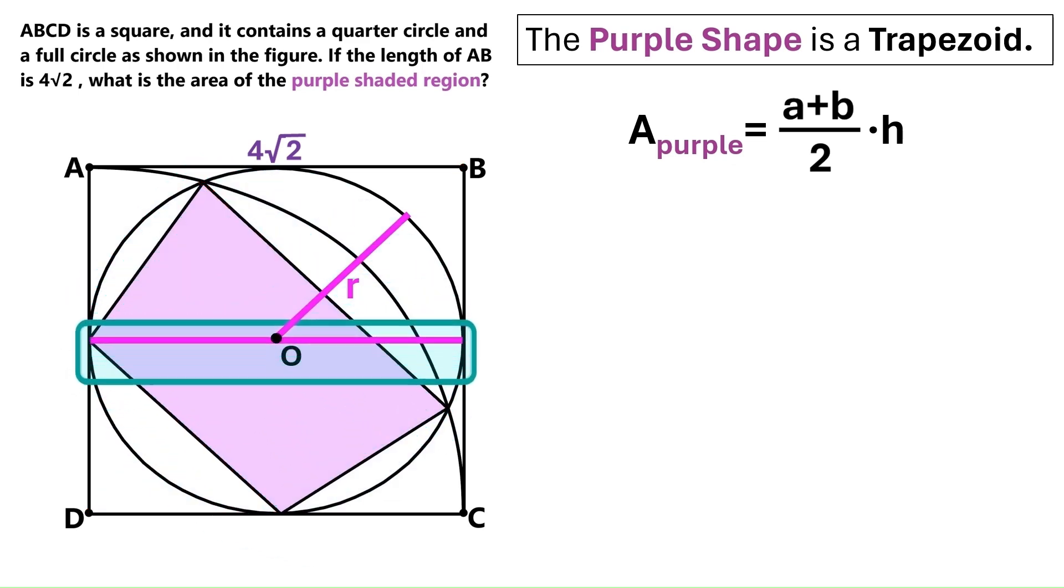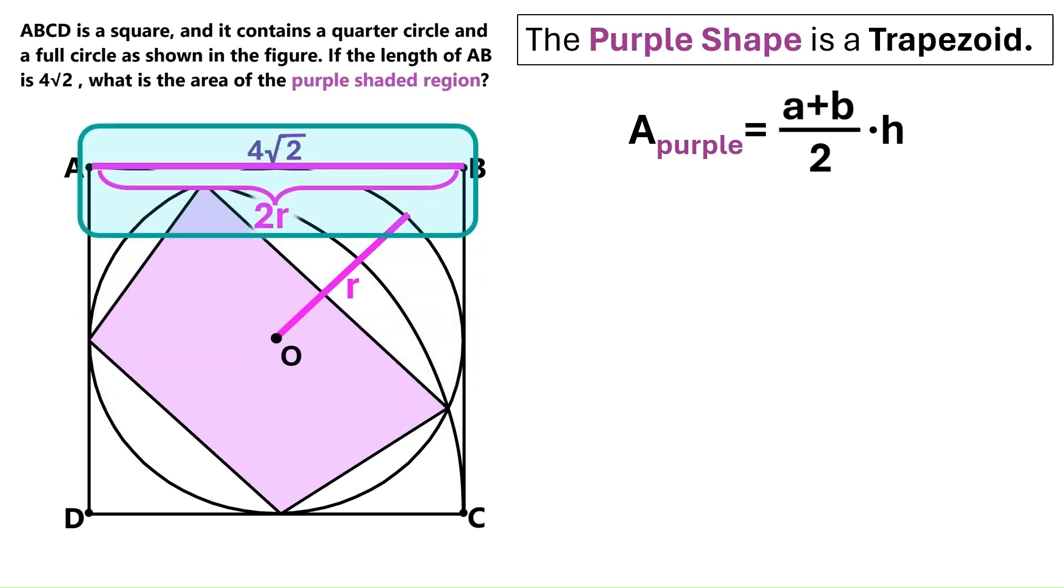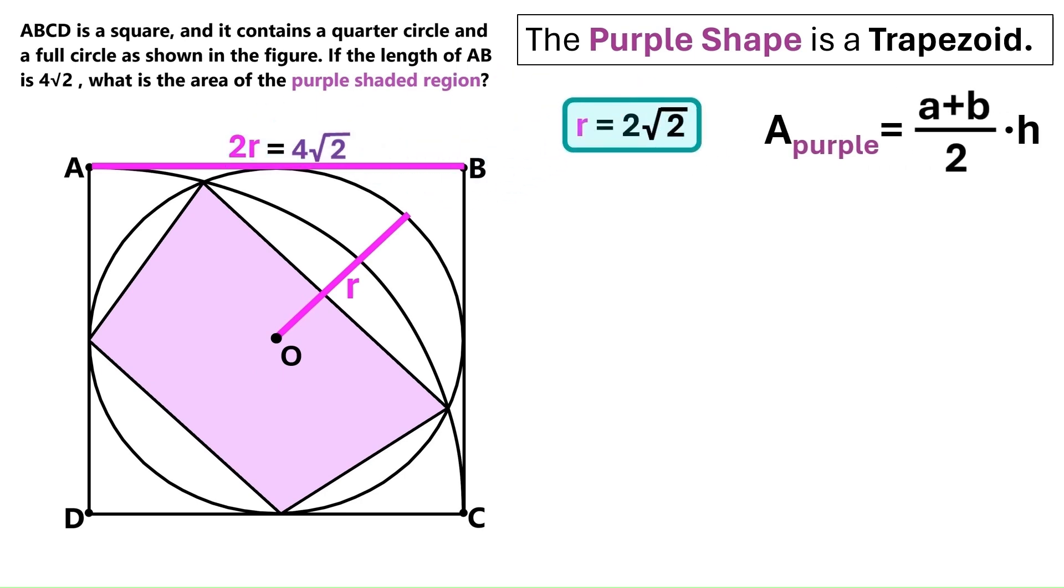we need to draw this diameter here, and it's obvious that it equals 2R. Now let's project it onto here, and it becomes clear that 2R equals 4 times radical 2, and R equals 2 times radical 2.